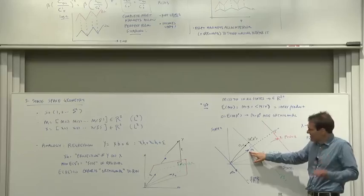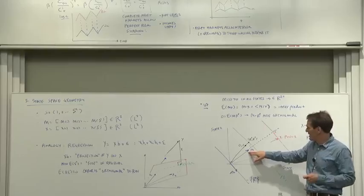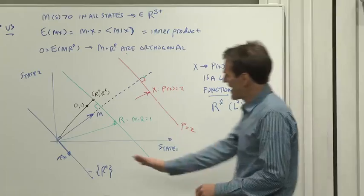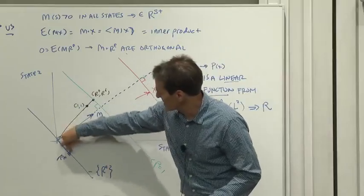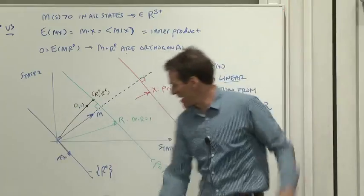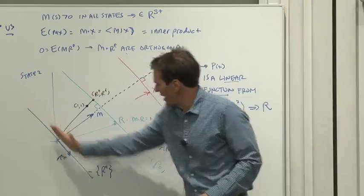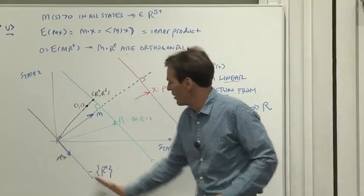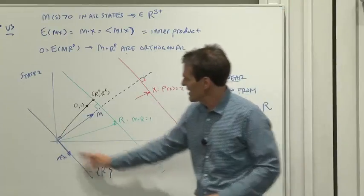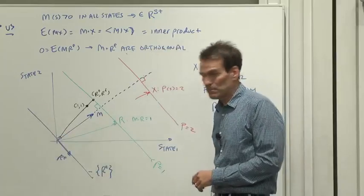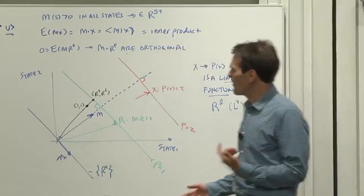So that lets us construct a state space representation, a picture of where everything goes. m is a vector in the positive orthant of our state space. An excess return is a vector like this. It's a vector at right angles to m. And the set of all excess returns, the set of all price zero securities, has to be this set that is at right angles to m.